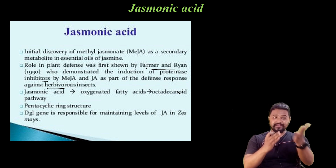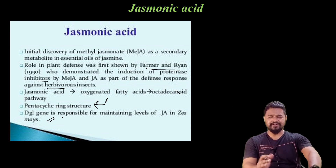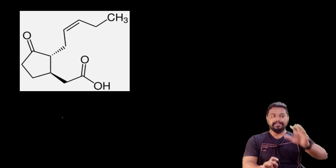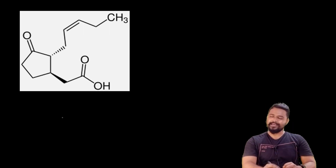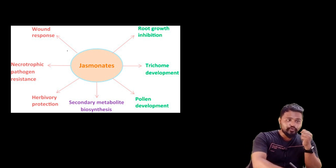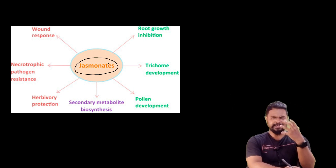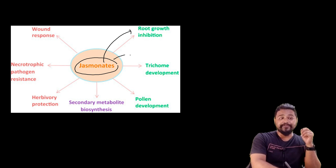Jasmonic acid has a penta-ring structure and is involved in oxygen-related processes. Its bioassay roles include mainly root growth inhibition and trichome development.